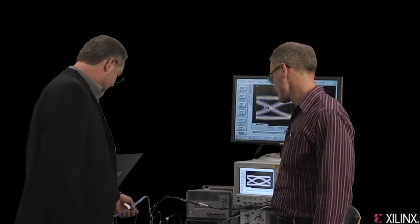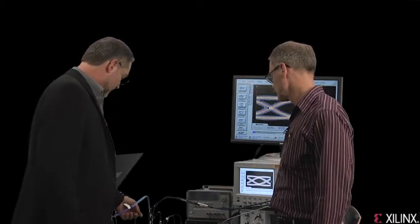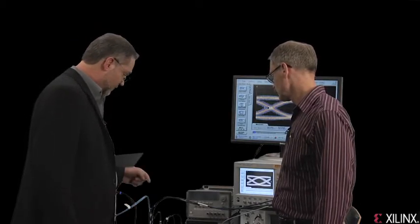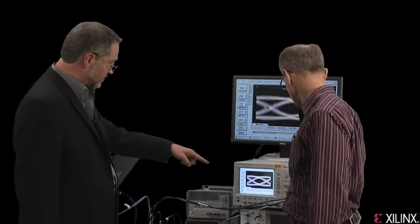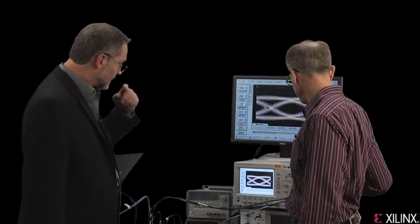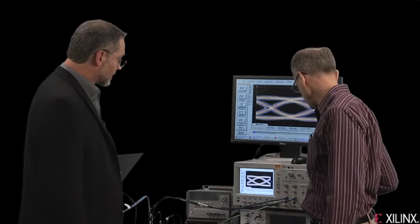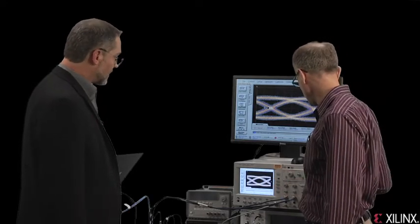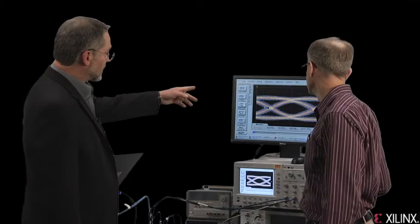The signals come out of that BGA package from your transceiver. They go across the board, and they come up through, looks like this cable into, what kind of scope are we looking at? We've got a sampling oscilloscope here. We're running into it differentially from the transmitter. And then the eye pattern shows up here.